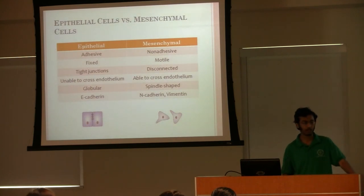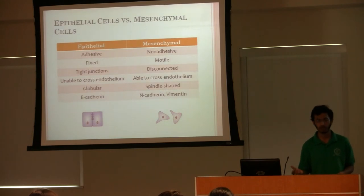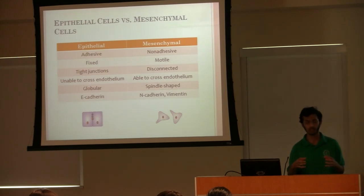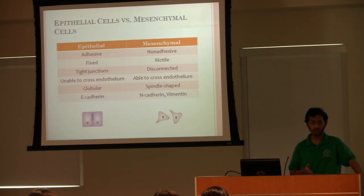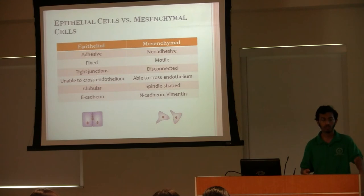Here's some more distinctions between epithelial and mesenchymal cells. Epithelial cells are adhesive, and they stay fixed to the epithelial tissue where they're found. They're also cohesive, so they're connected by tight junctions to other epithelial cells. Mesenchymal cells, on the other hand, are not adhesive, they're motile, they're disconnected, which makes them able to cross the endothelium blood vessels and invade new sites. As seen from the figure, epithelial cells are also globular, while mesenchymal cells are more spindle-shaped. And the characteristic that we used to differentiate between them in our western blots was that epithelial cells express high concentrations of a protein known as E-cadherin, while mesenchymal cells tended to express higher concentrations of N-cadherin and vimentin.